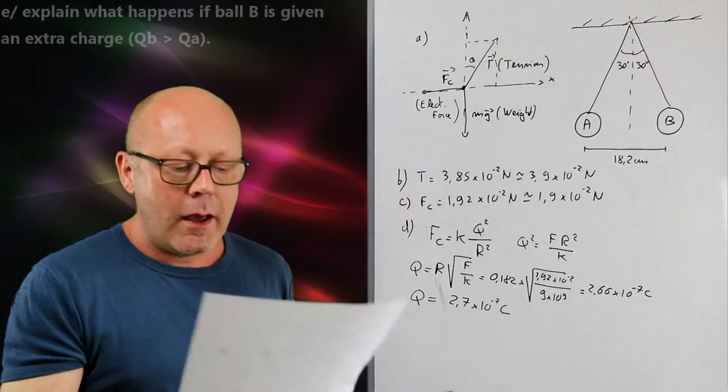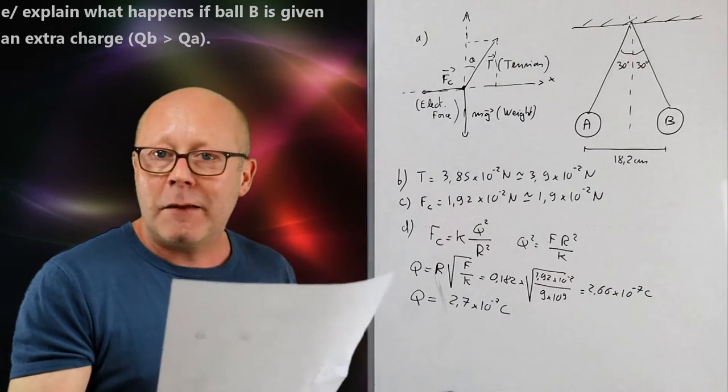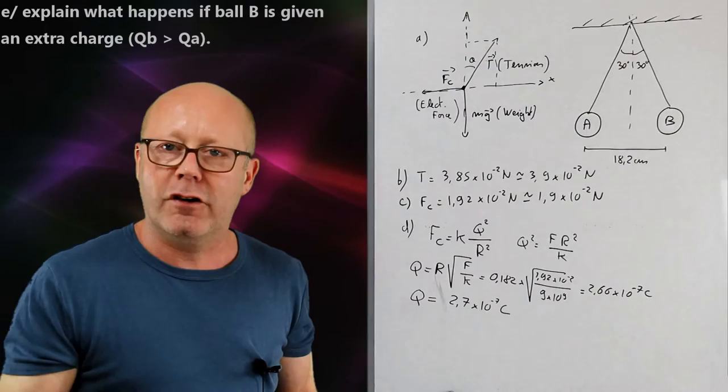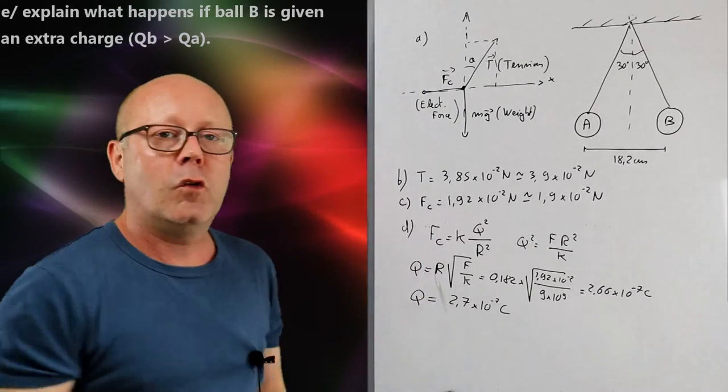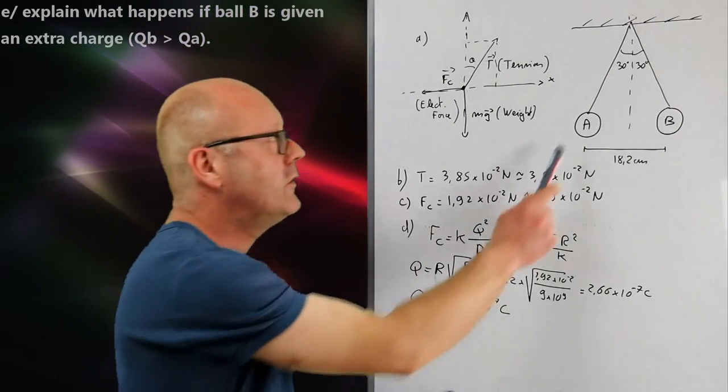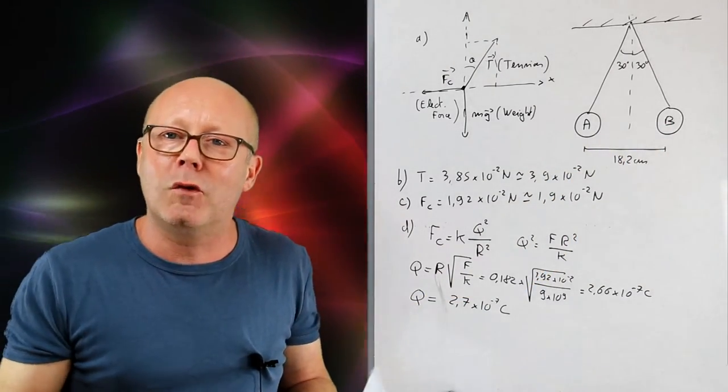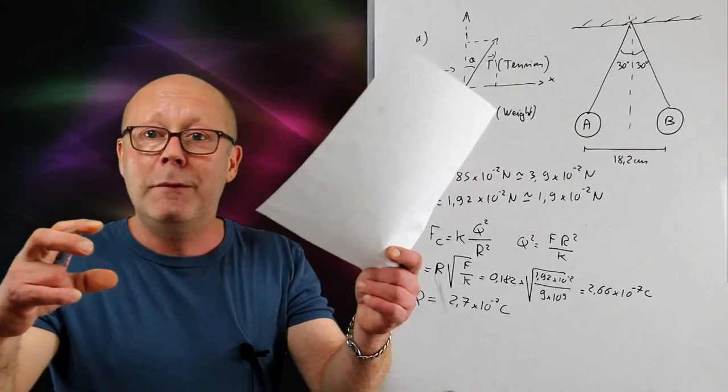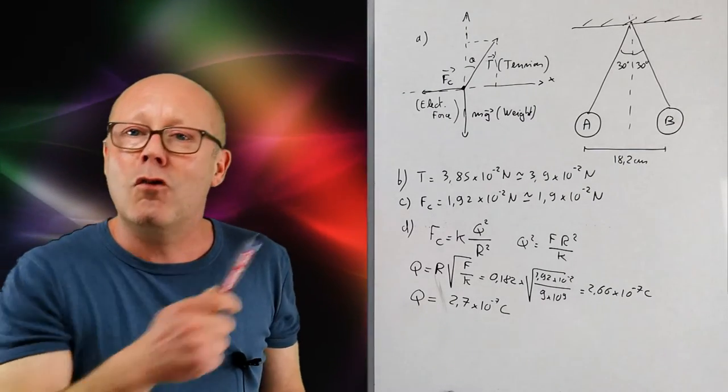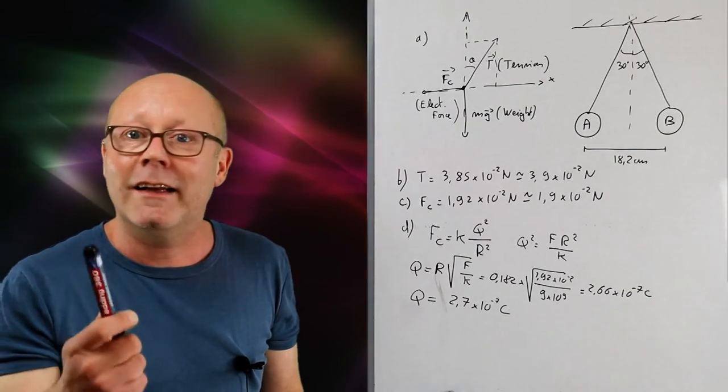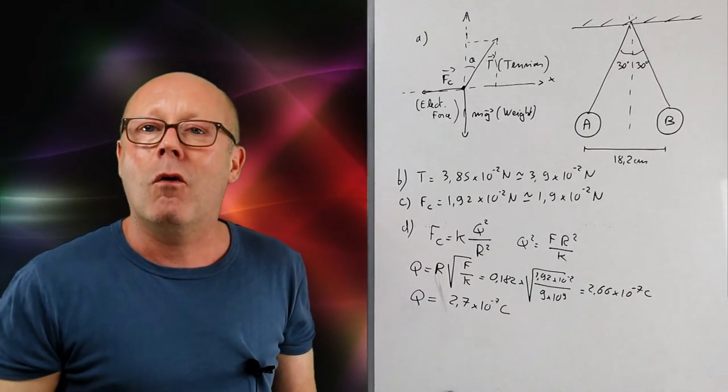Question E. Explain what would happen if ball B was given an extra charge. That means that the charge on B would be now larger than the charge on ball A. So if the charge on B would be bigger, that means that the Coulomb force would be stronger. But remember that the Coulomb force is the same on both balls. Basically, the force would be the same. The magnitude of the force would be the same on both balls. They would just be pushed a bit more. So the distance between the balls would increase because the magnitude of the Coulomb force on each of them increases and is the same for each ball. And therefore, the angle between the rope and the vertical would also increase. Two marks.